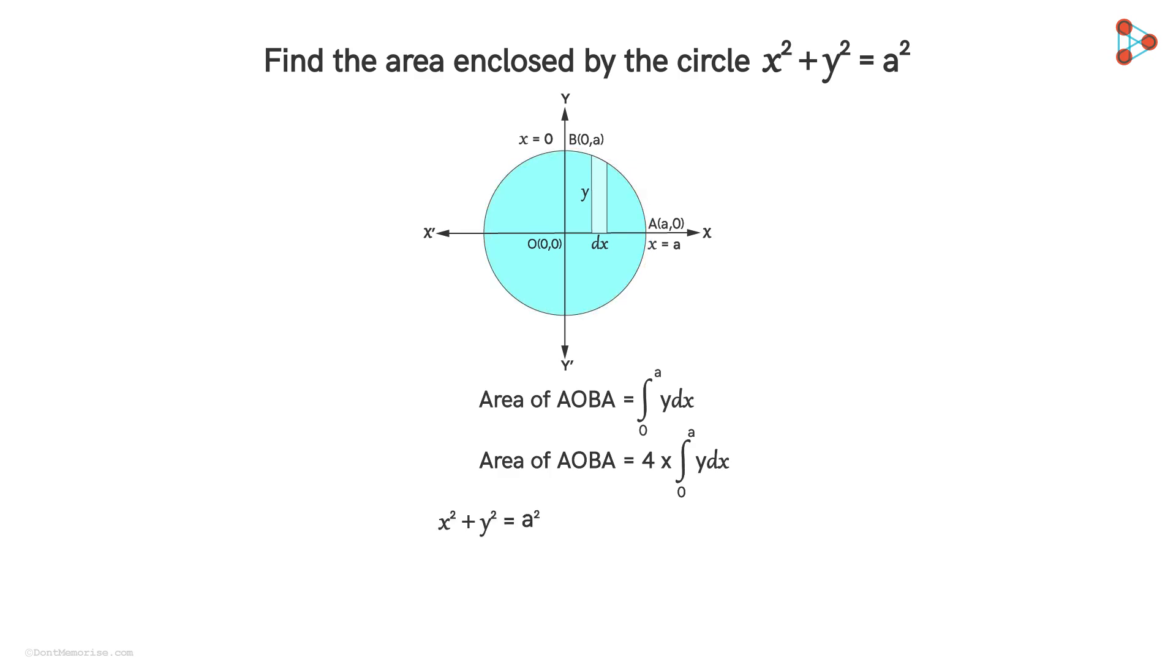Now from the given equation of this circle, we can write y = ±√(a² - x²). Since the region AOBA lies in the first quadrant, y can be taken as positive. So on substituting, we get the integration as shown.